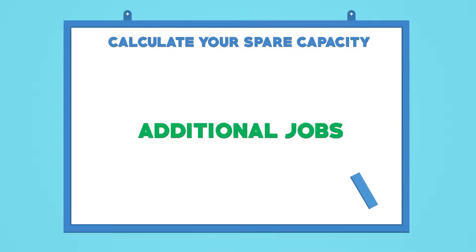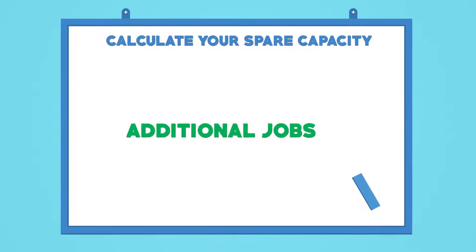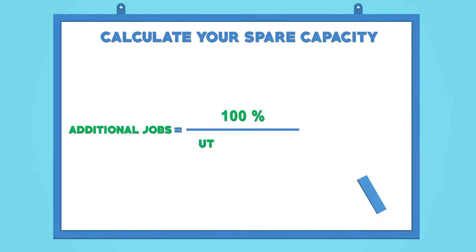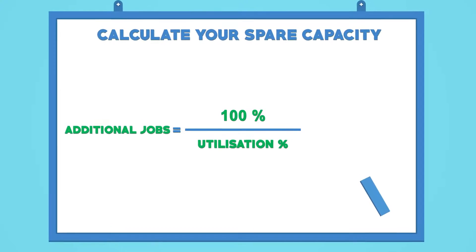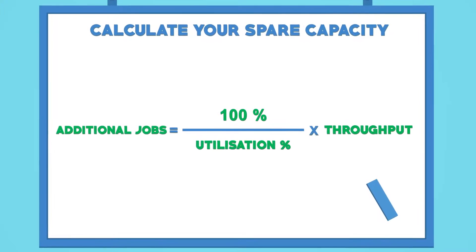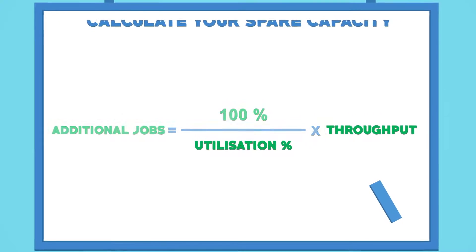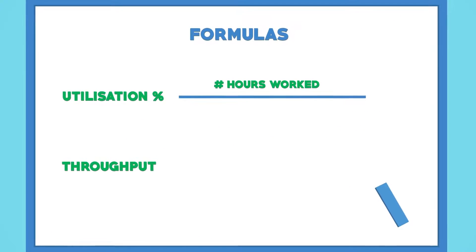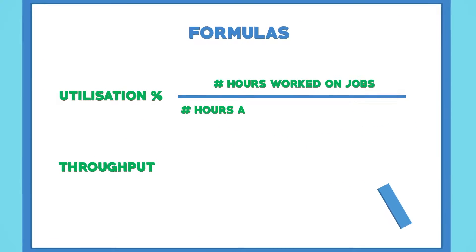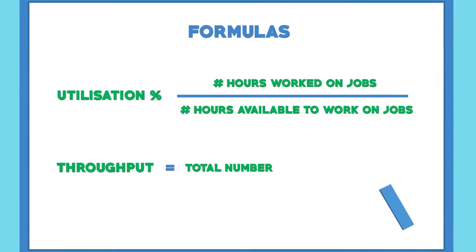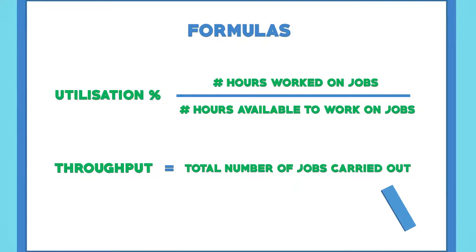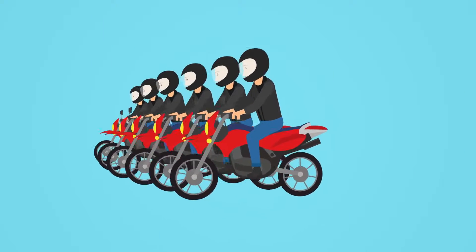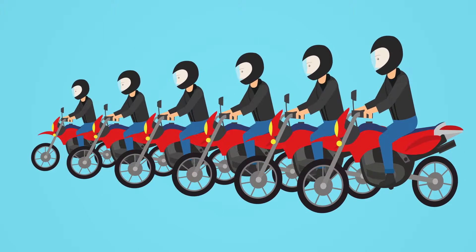Once you have calculated the utilization, you can use it to calculate your spare capacity. To find out how many additional jobs you can take, divide 100 by the percentage of utilization, multiplied by your throughput. Remember to use your previous formulas and sheets to calculate your utilization and your throughput.